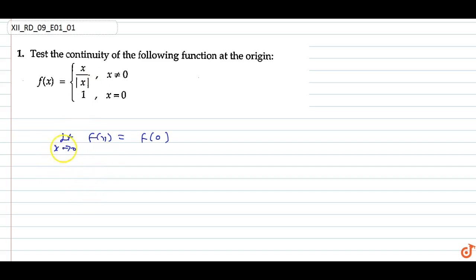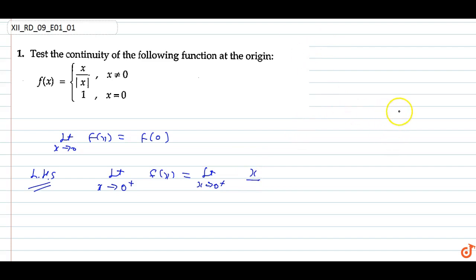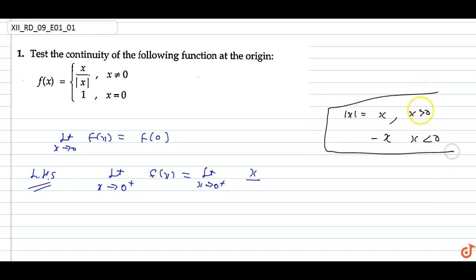For the LHS, we have the limit as x tends to 0 plus of f(x). When x is greater than 0, mod x equals x. So the limit as x tends to 0 plus of x upon x gives us 1.